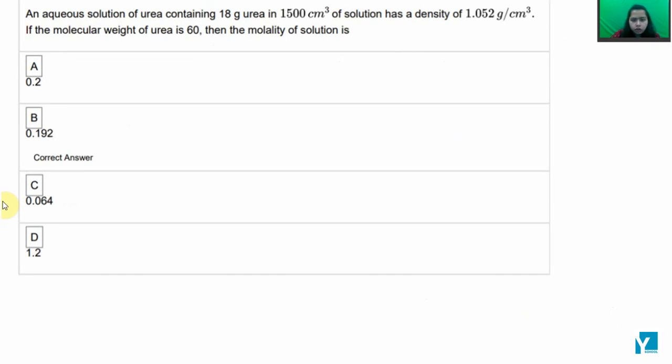An aqueous solution of urea containing 18 grams of urea in 1500 cubic centimeters of solution has a density of 1.052 grams per cubic centimeter. The mass of urea given is 18 grams.